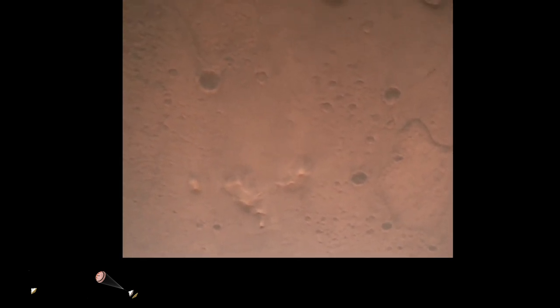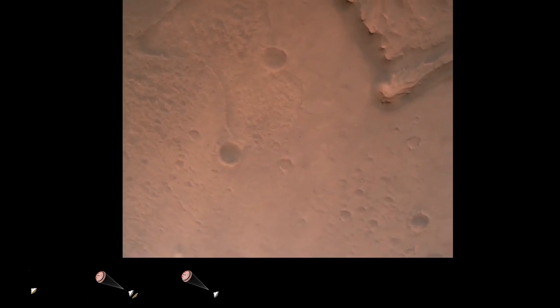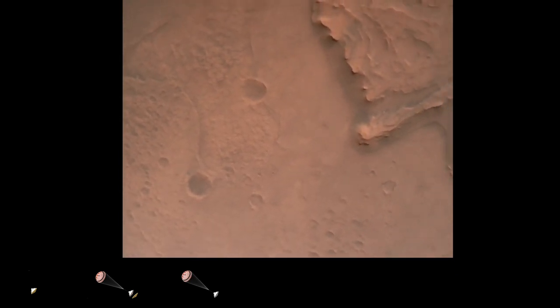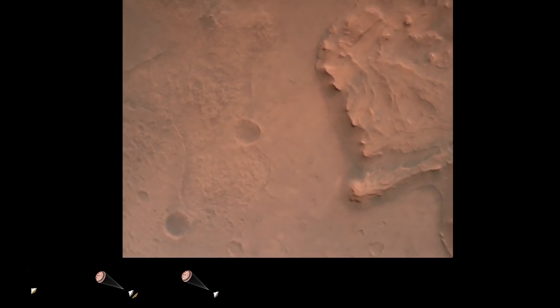Nav filter converged. Velocity solution, 3.3 meters per second. Altitude, 7.4 kilometers. Now has radar lock on the ground. Current velocity is about 100 meters per second, 6.6 kilometers above the surface.